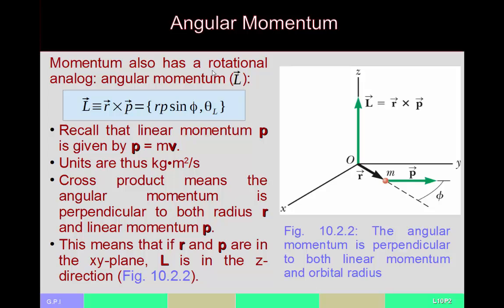Linear momentum has a rotational analog found in angular momentum. We represent that with the vector L, and the definition for angular momentum L is that it is the radial position crossed with the momentum. It is a cross product, which means it forms a vector perpendicular to both of the two vectors used to make that cross product.